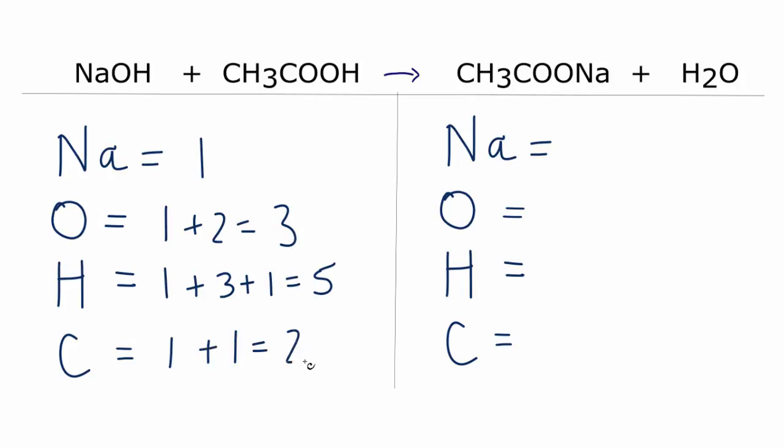Over on the product side, let's just do the same order we have here. Na, we have 1 of those. Oxygens, we have 1 plus 1 plus 1. So we have 3 oxygens.